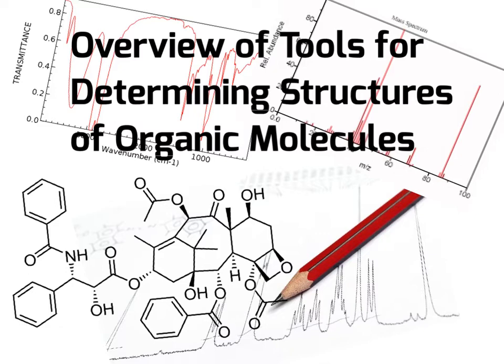Over the course of the next two modules, we'll be walking through a variety of tools for determining the structures of organic molecules, so that by the end of the next few modules, you'll be comfortable interpreting the types of spectral data shown in this slide, where we have an IR spectrum, a mass spectrum, and an NMR spectrum all shown. Right now these all probably look rather similar to you and you quite possibly can't make any information out from these spectra, but by the end of the next two modules, the goal is that you will understand this.